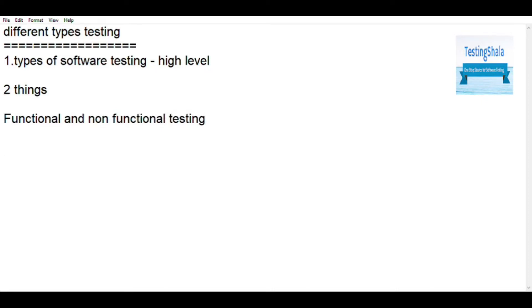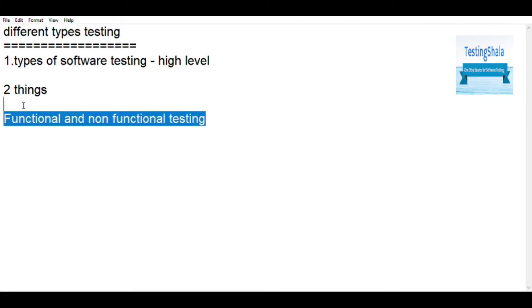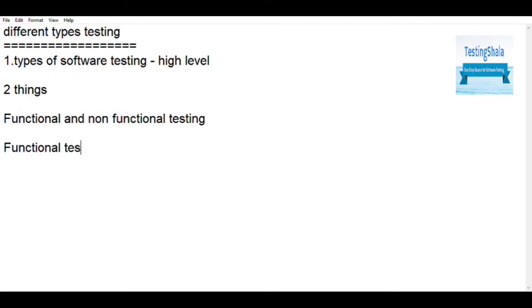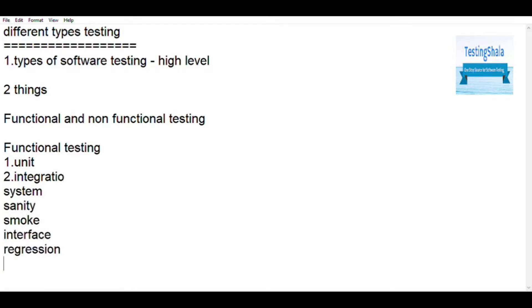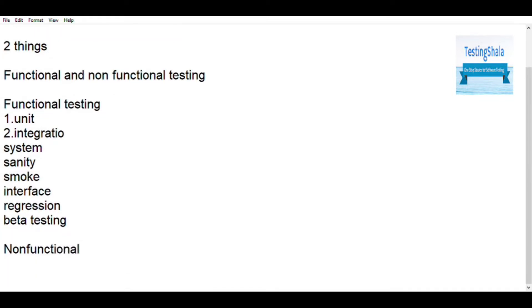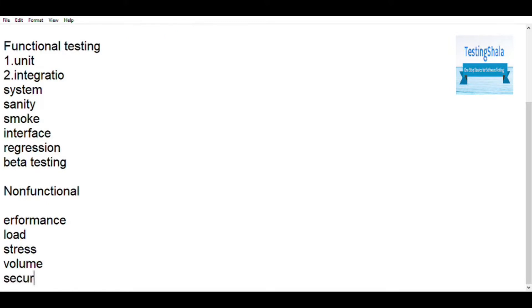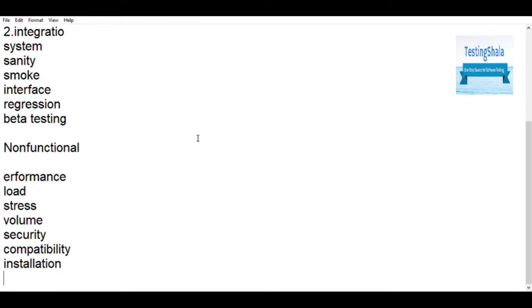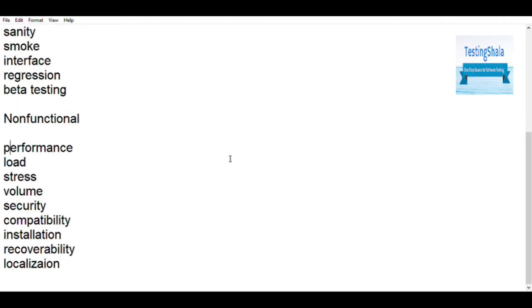On a very high level, software testing is classified as two things: functional testing and non-functional testing. Functional testing has been further broken down to unit testing, integration testing, system testing, sanity testing, smoke testing, interface testing, regression testing, and beta testing. These are some of the different types of functional testing.